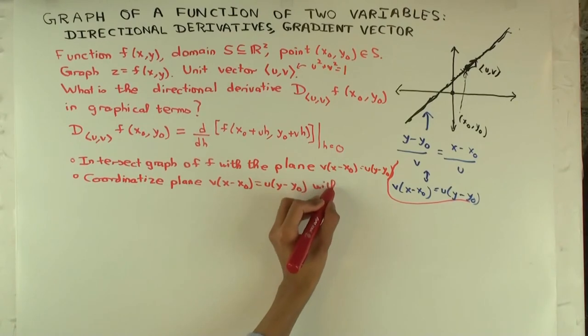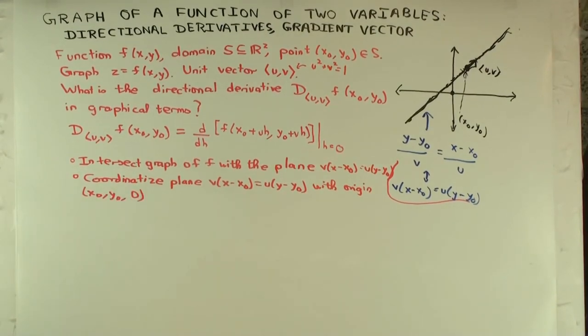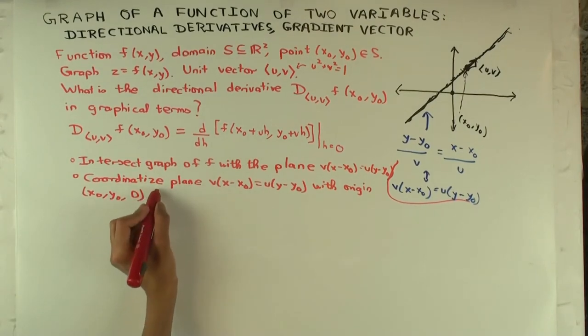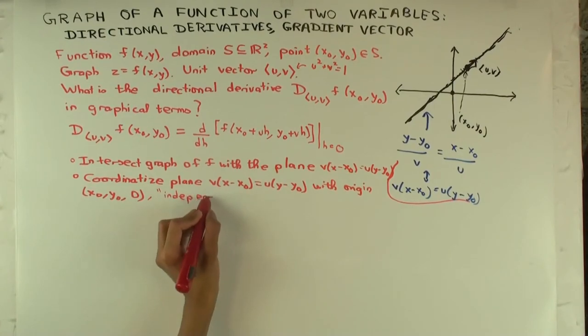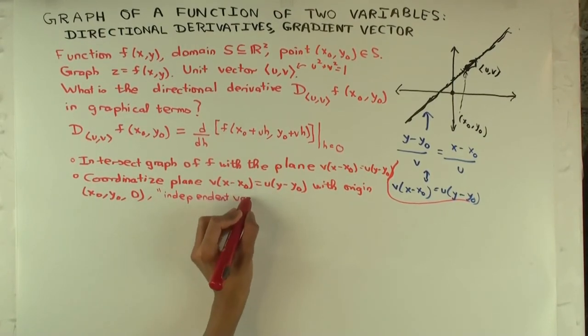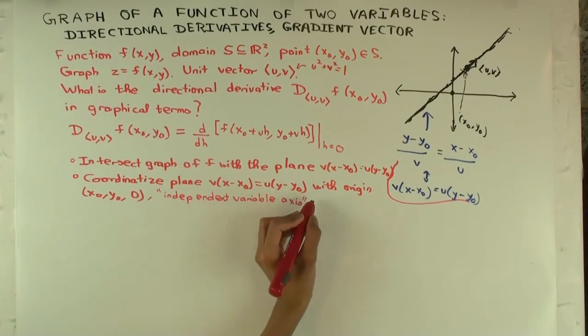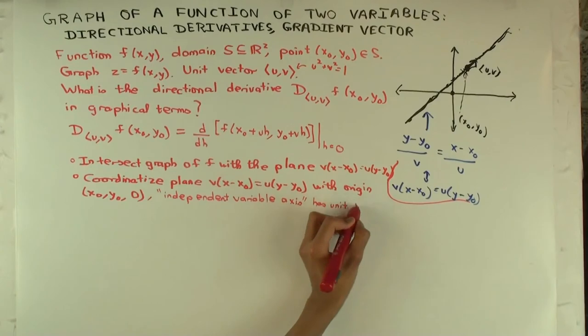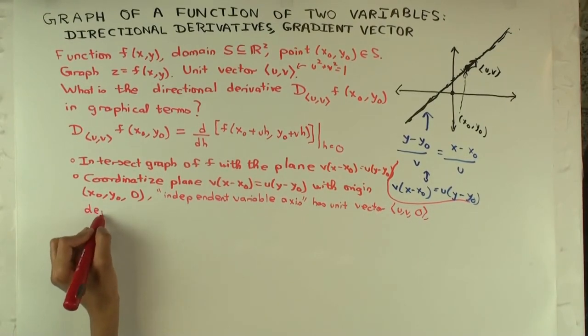With origin. So what's the origin going to be? (x₀, y₀). Well, it's now (x₀, y₀, 0). Now you're in three dimensions. And the independent variable axis has, what's the unit vector in that? (u, v, 0). Right? Now you're in three dimensions. You could add a 0. And the dependent variable axis is just the z-axis.